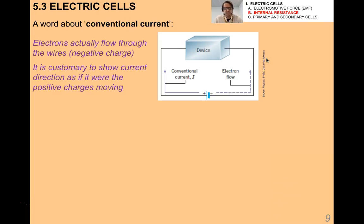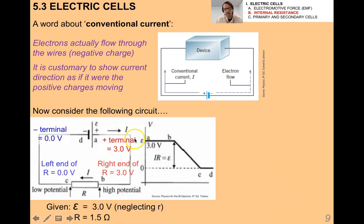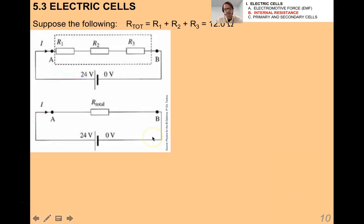Now a little more about conventional current: it's actually negative charge that flows through the wires, but it's customary to show the current direction as if positive charge were moving. You can think of the battery as a hill — charge falls down that hill — and a resistor in series with a battery represents a component in series dissipating energy.